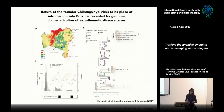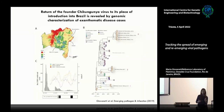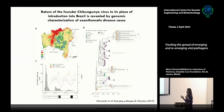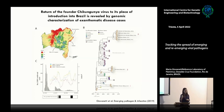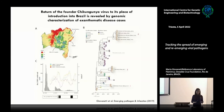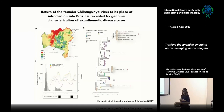We then extended those activities to understand how complex the Brazilian epidemiological scenario was, characterized by the circulation and co-circulation and reintroduction of several strains mediated by inter-regional movement. Once again, human mobility and globalization can play such an important role.